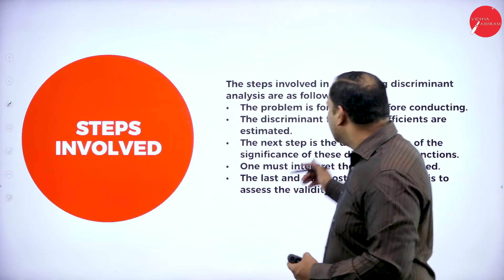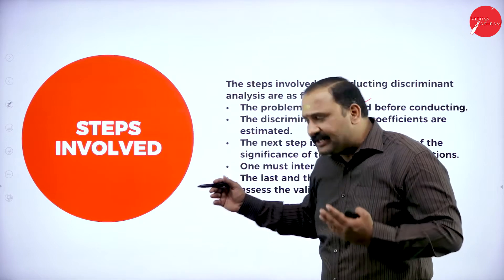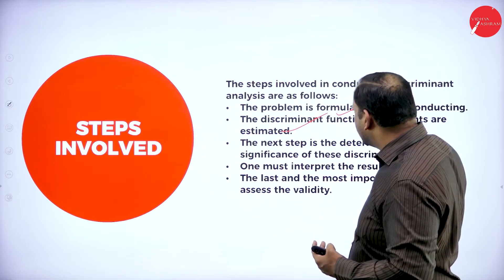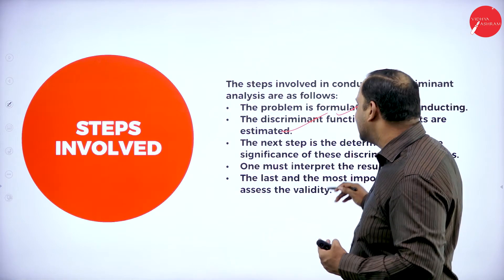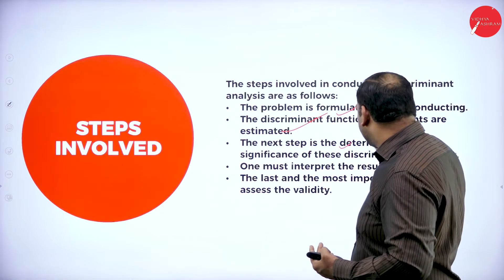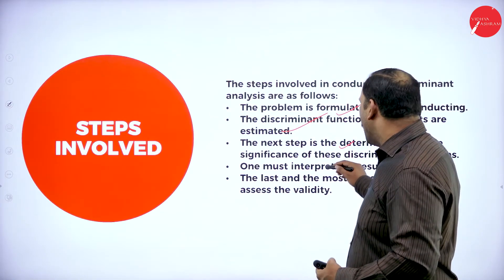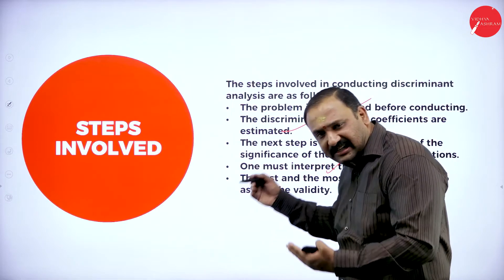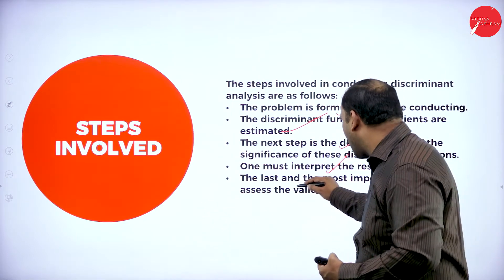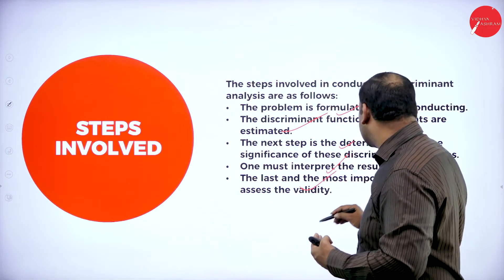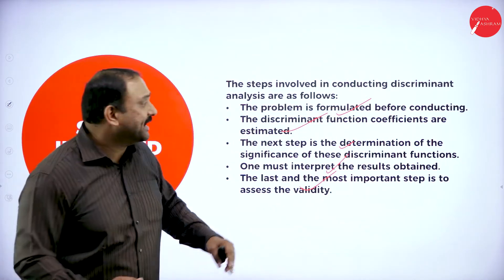The steps involved: first, the problem is formulated before conducting the analysis. Next, the discriminant function coefficients are estimated. The third step is to determine the significance of these coefficients. One must then interpret the results that are obtained. Finally, the last and most important step is to assess the validity.